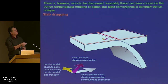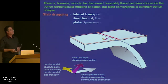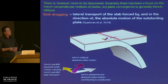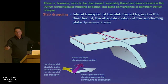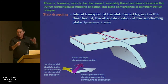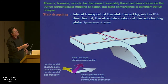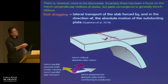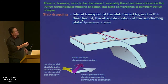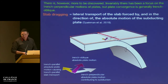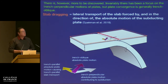This is called slab dragging. The definition — it's a mouthful — is the lateral transport of the entire slab, forced by and in the direction of the absolute motion of the subducting plate. This has now been published in Nature Geoscience early this year.